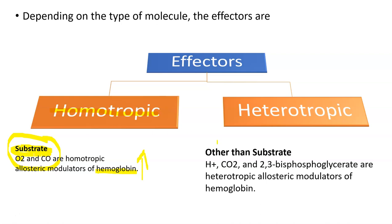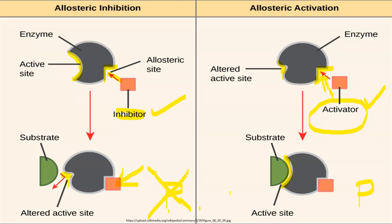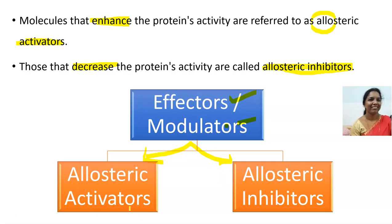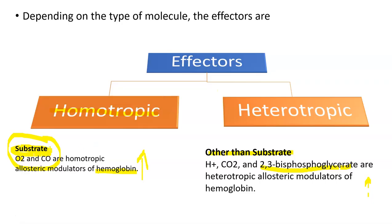If a molecule other than the substrate binds to the effector site, either increasing or decreasing the activity, then it is said to be a heterotropic effector. For example, in hemoglobin, hydrogen ion concentration, carbon dioxide, and 2,3-bisphosphoglycerate act as heterotropic allosteric modulators. If the substrate changes activity it is homotropic; if other molecules change enzyme activity, they are heterotropic effectors.